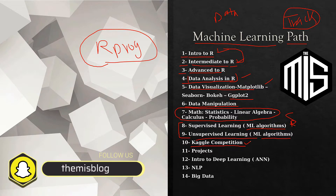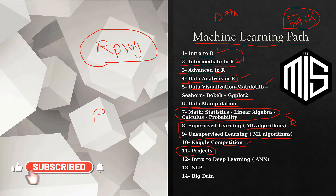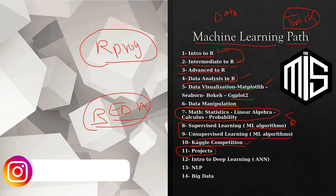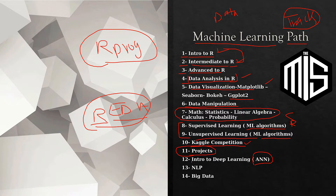DataCamp has their own projects section — after each course they give you an assignment or project, and there's a full projects section on their website where you can filter by language and topic, for example R and EDA, and it shows all relevant projects. Since we're covering machine learning, it would be nice to have an introductory deep learning course, and additional courses on NLP and big data would also be valuable.